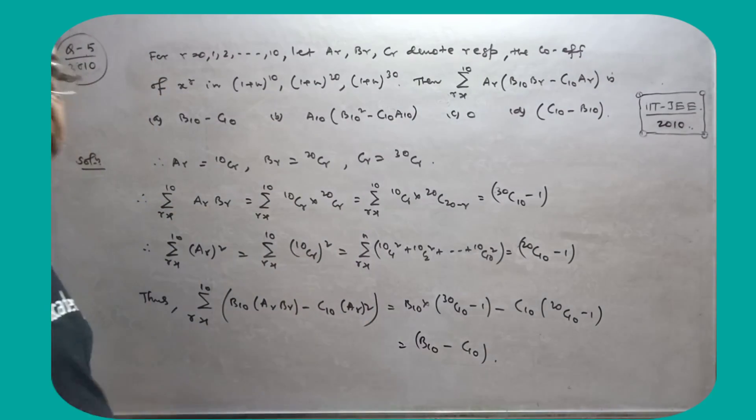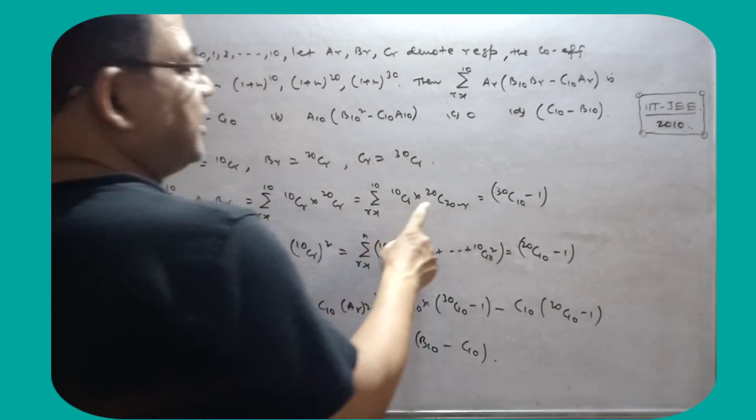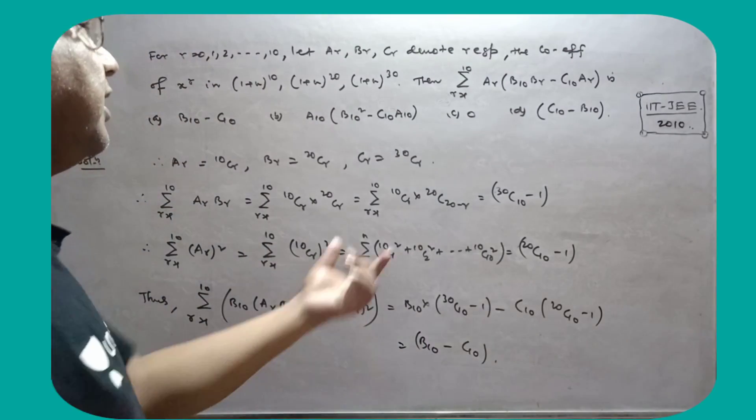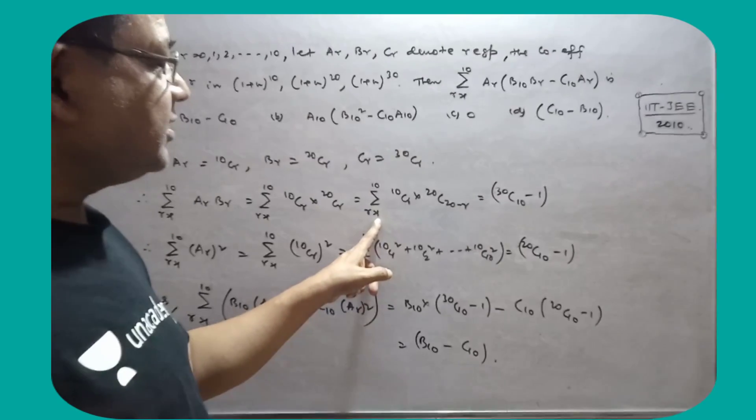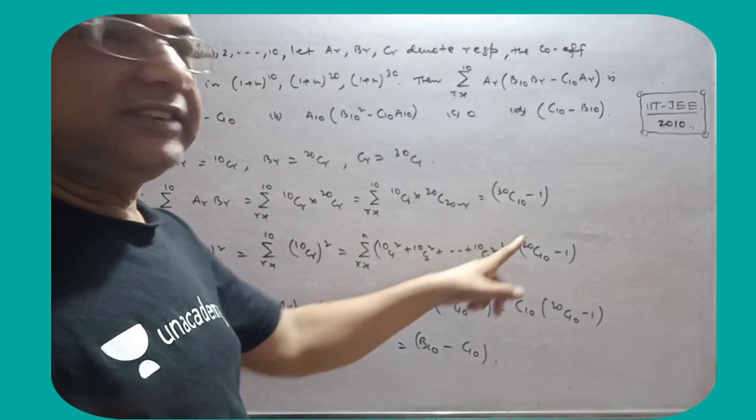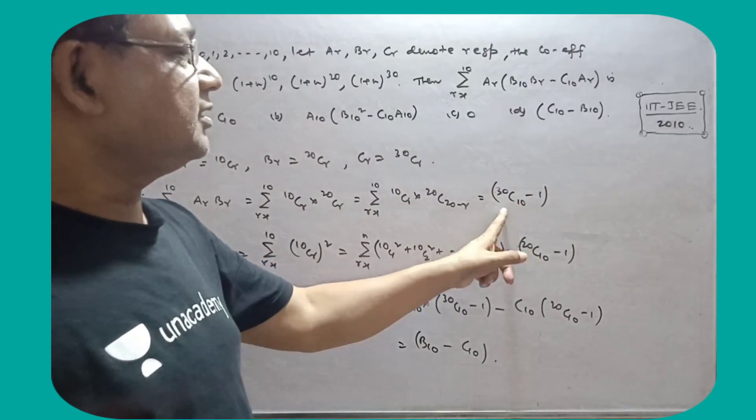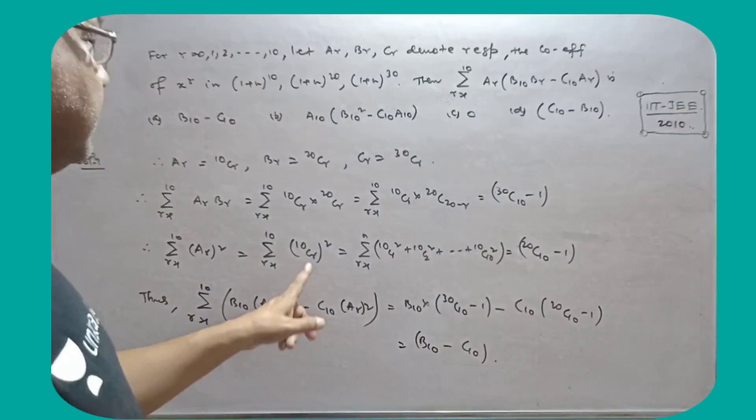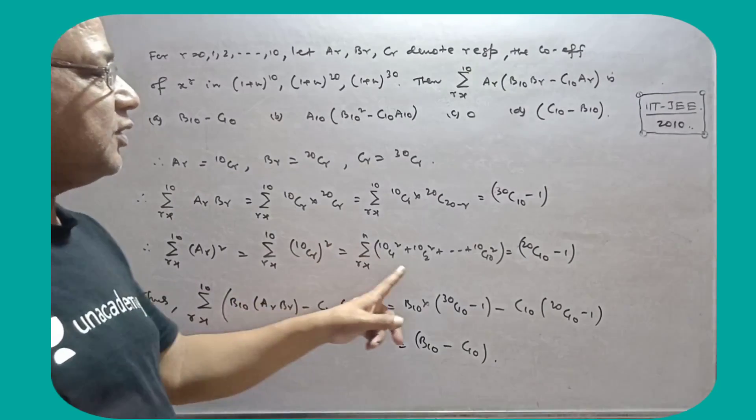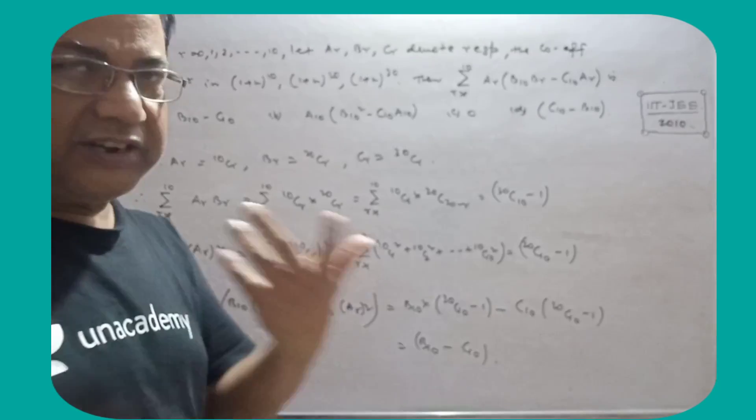ar times br: ar is 10Cr and 20Cr. nCr is nC(n minus r), so 10Cr times 20C(20 minus r). This is the value of 1. Suppose 0, 30C10, so 1, this is the value of 10Cr, this is the value of standard identity.